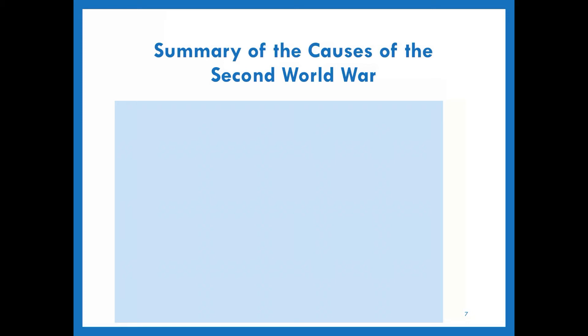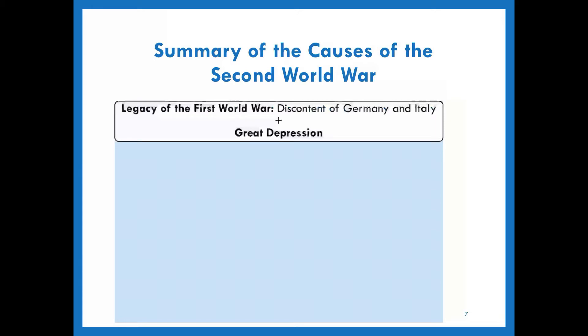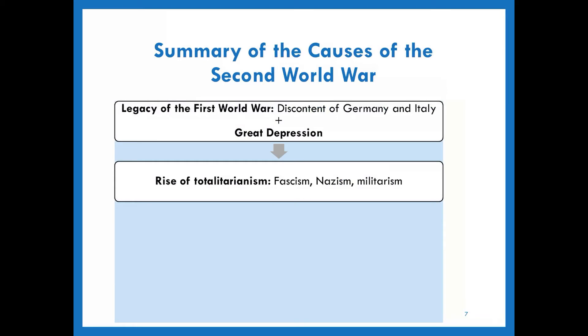At the beginning of this lecture video, I would like to show you the formula of the causes of the Second World War that I showed you last lesson. Firstly, we have to mention the First World War, and then the Great Depression. These two major factors caused the rise of totalitarianism.